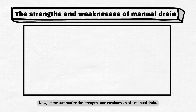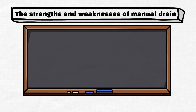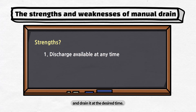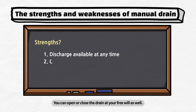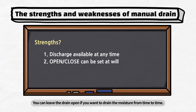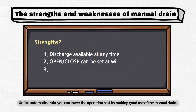Now, let me summarize the strengths and weaknesses of a manual drain. The strength of using a manual drain is that you can check the amount of moisture by yourself and drain it at the desired time. You can open or close the drain at your free will as well. Even if some compressed air is wasted, you can leave the drain open if you want to drain the moisture from time to time. Unlike automatic drain, you can lower the operation cost by making good use of the manual drain.